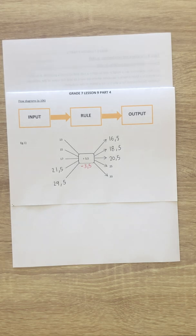You follow from the input to the rule to the output. If you need to work out the input number, then you just go backwards and you use the inverse operation.